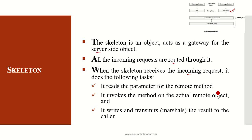The skeleton reads the parameters from the remote method — whatever comes from the remote reference layer. It invokes the method on the actual remote object, then writes and transmits the result back to the caller, which is the client side. It continuously works, transmitting the complete data structure from one address space to another.